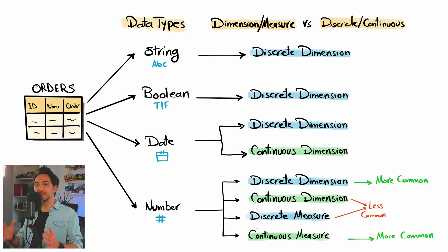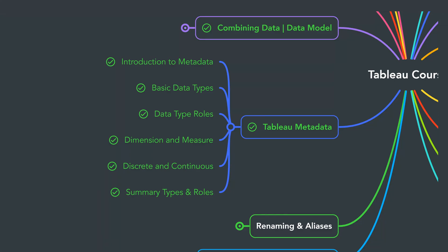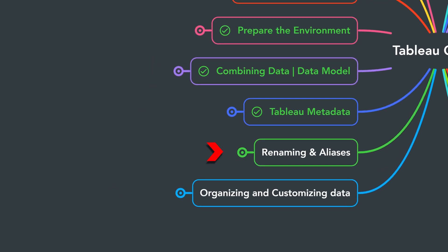All right guys, so with this you have the big picture for all those confusing concepts in metadata in Tableau. So we have now better understanding about the data types and roles in Tableau and these important concepts. And in the next section we will learn about renaming and aliases in Tableau.